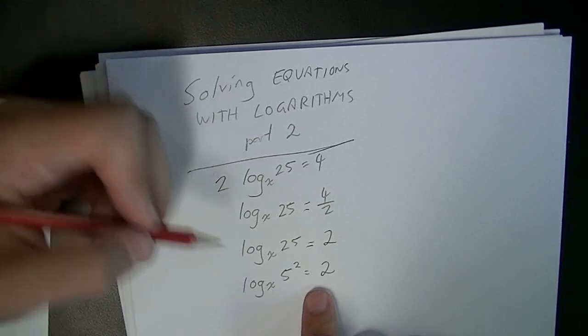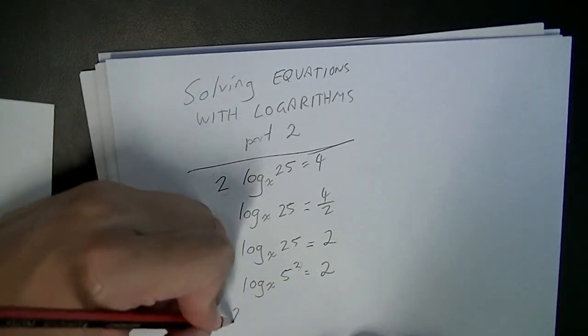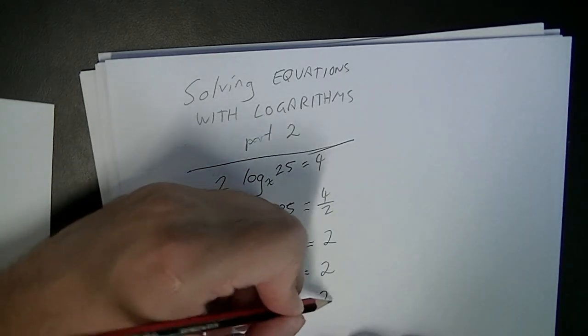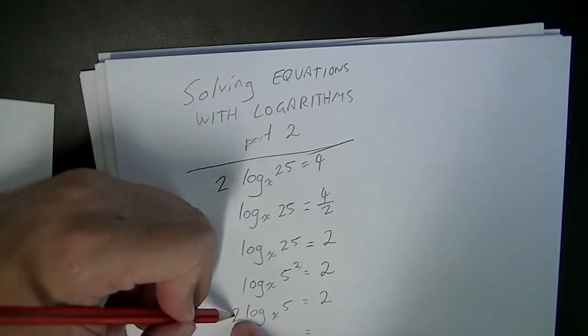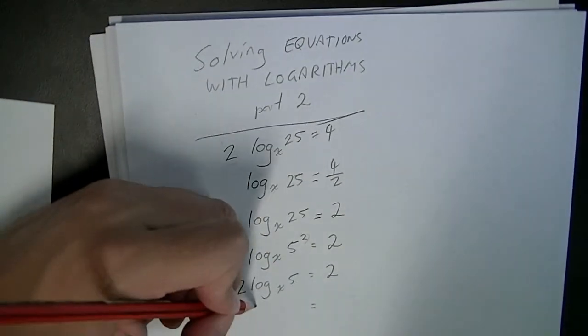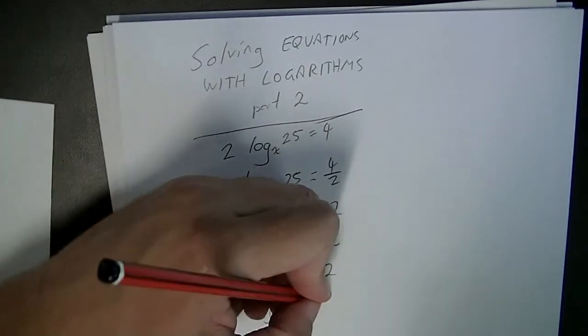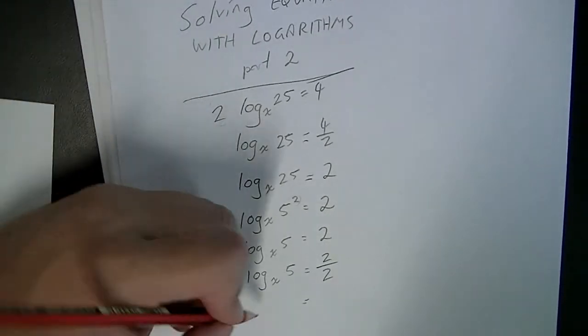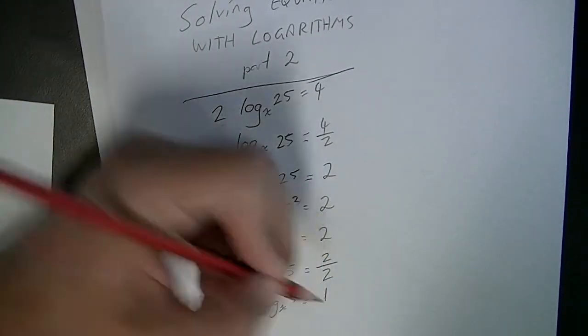Now you should be able to remember from your log laws that this power 2 can come out the front, 2 log base x of 5 equals 2. Now this will give us, this 2 will come out here, so we're going to have log base x of 5 equals 2 over 2. Now that's going to give us log base x of 5 equals 1.